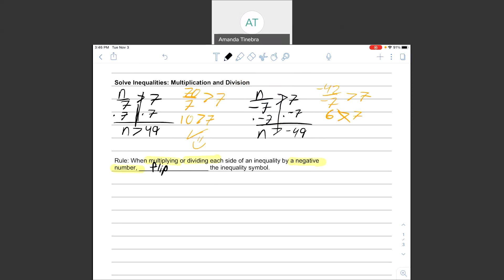So what that means is that for up here on our previous example, n is not greater than negative 49. I still have my negative 49 and my n, but I have to flip the symbol backwards and make it less than.